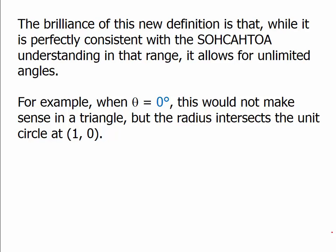For example, when the angle is 0, that makes no sense in a triangle — we can't have a triangle with an angle of 0. But we can talk about that in the unit circle definition. A radius at angle 0 intersects the unit circle along the positive x-axis at point (1, 0). That means sine of 0 equals the y-coordinate, which is 0, and cosine of 0 equals the x-coordinate, which is 1. That value is totally impossible within the SOHCAHTOA system, but our new system allows us to assign values to it.